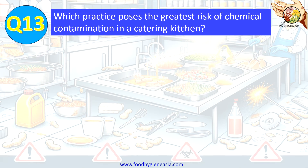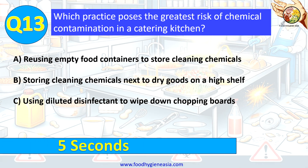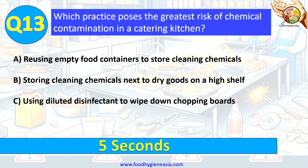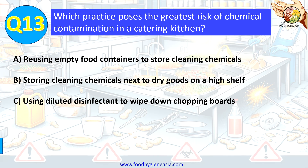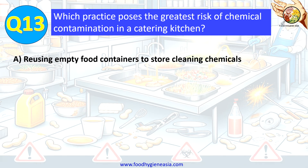Question 13. Which practice poses the greatest risk of chemical contamination in a catering kitchen? A. Reusing empty food containers to store cleaning chemicals. B. Storing cleaning chemicals next to dry goods on a high shelf. C. Using diluted disinfectant to wipe down chopping boards. The correct answer is A. Reusing empty food containers to store cleaning chemicals.